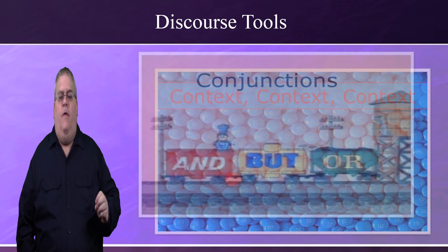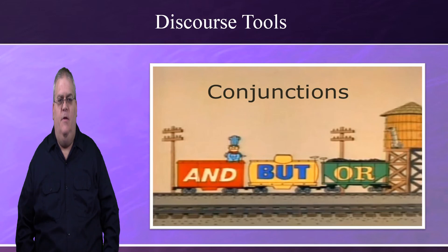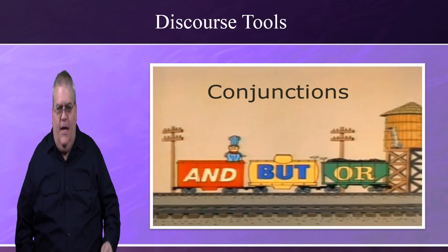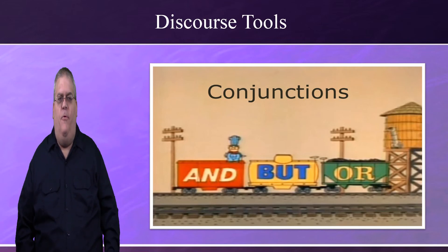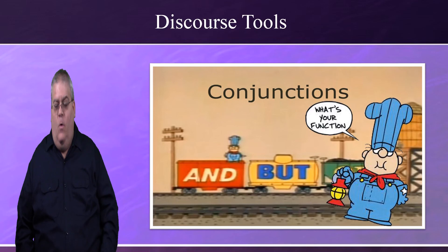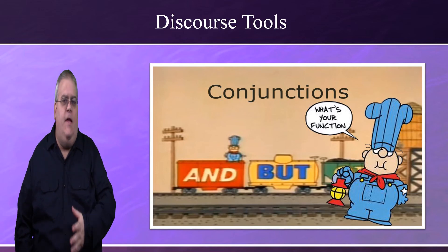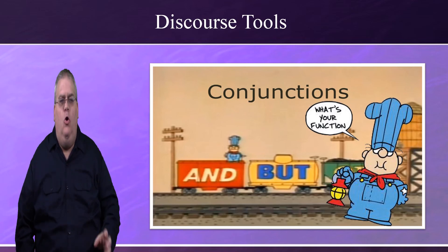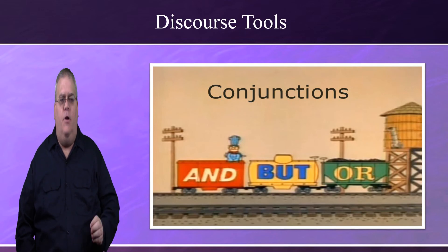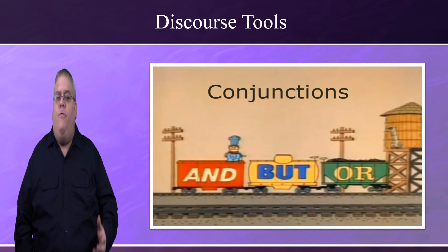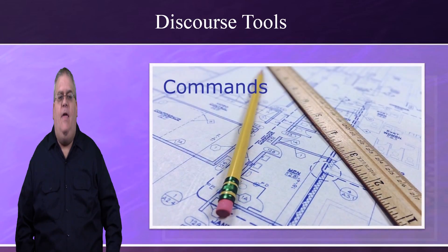Secondly, look for the logical connections between ideas — these are especially seen in the conjunctions. Conjunctions are those words that connect ideas together, such as 'and,' 'but,' 'because,' 'if,' 'therefore,' etc. The old cliché is that whenever you see the word 'therefore,' you should ask what it is there for — that's actually good advice, and it applies to all logical connecting conjunctions. Why are they there? What do they connect and how do they connect them? So look at the text and notice the logical connections between the ideas.